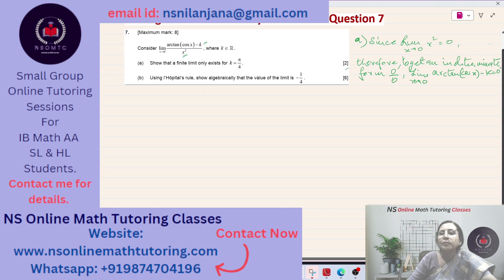Therefore, limit of arctan of cos x minus k is equal to 0. And when x tends to 0, cos x is equal to 1. So arctan of cos 0 is equal to 1, so arctan of 1 minus k is equal to 0. Or k is equal to arctan of 1. And what is arctan of 1? It is equal to π over 4. Therefore, k is equal to π over 4. Shown.